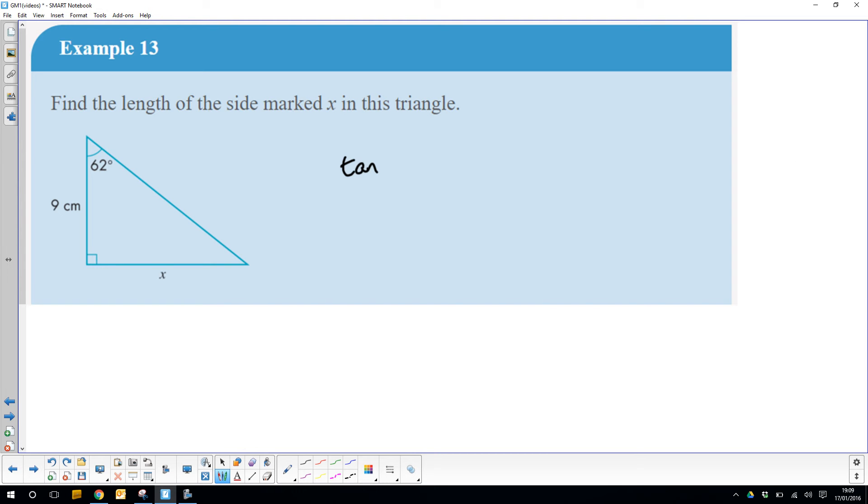So we have tan theta equals opposite over adjacent. Feeding the information that I have: tan 62 equals x divided by 9, so x equals 9 times tan 62, which I can type in: 9 tan 62.